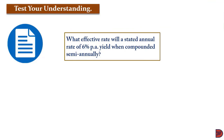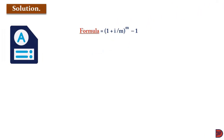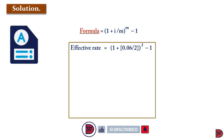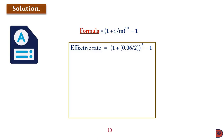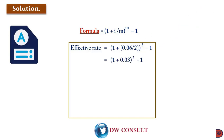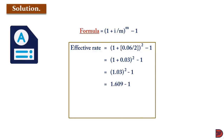Let's test our understanding again. What effective rate would a stated annual rate of 6% yield when compounded semi-annually? Because it is semi-annually, the compounding period m equals 2. Applying the formula: 1 plus 0.06 divided by 2, raised to the power 2, minus 1. This gives us 1 plus 0.03, raised to the power 2, minus 1, giving us 1.03 squared minus 1, which equals 1.0609 minus 1, giving 0.0609.